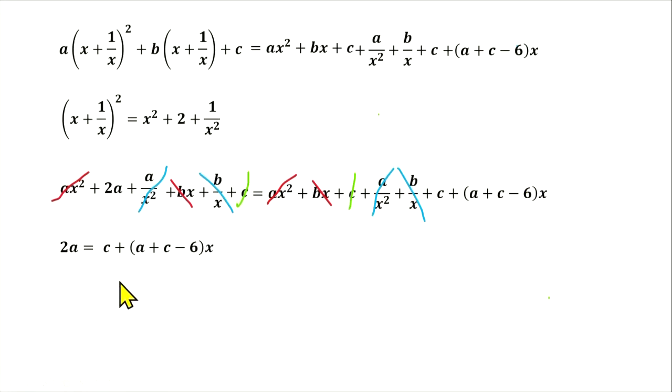So on the left hand side remains 2a. On the right hand side we will have c plus this term. Don't forget that this equation is valid for all real x, and a and c are constant. So to satisfy this condition, we need to suppose that a plus c minus 6 equals 0. So we have first equation for a and c.